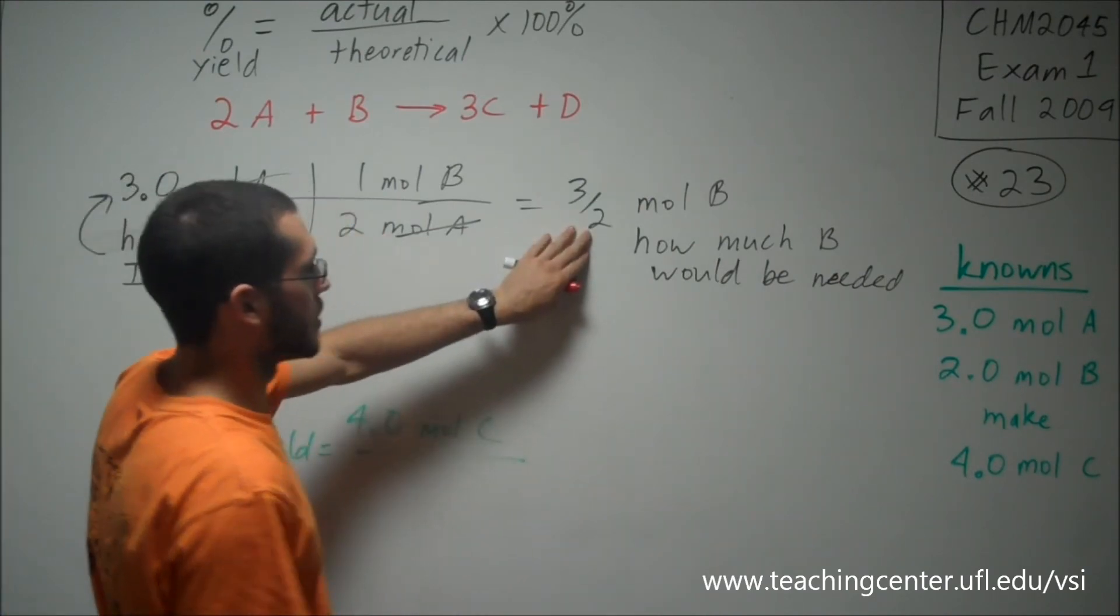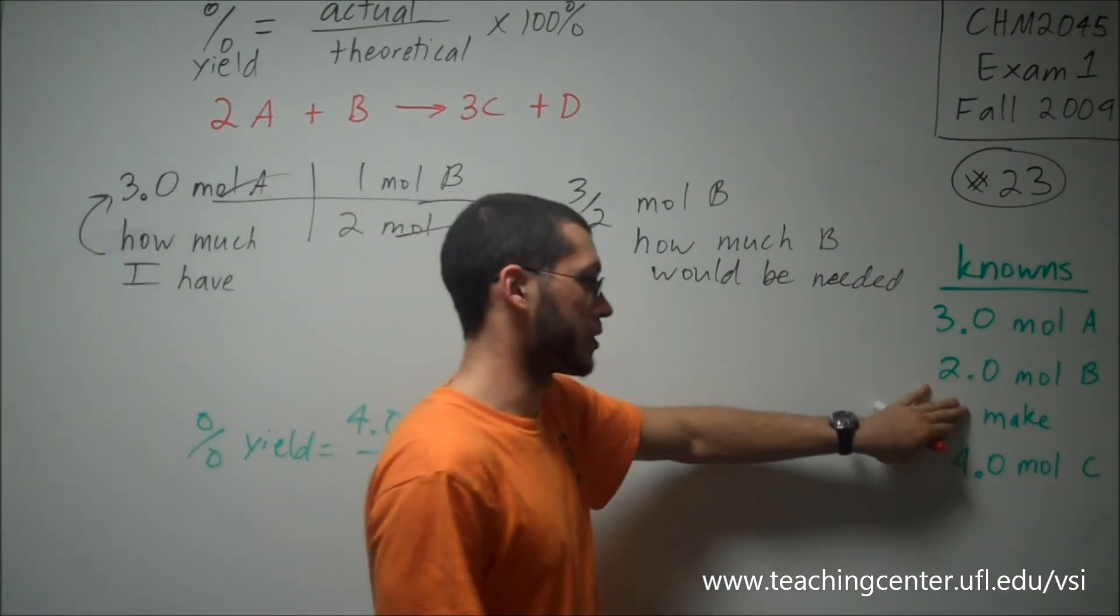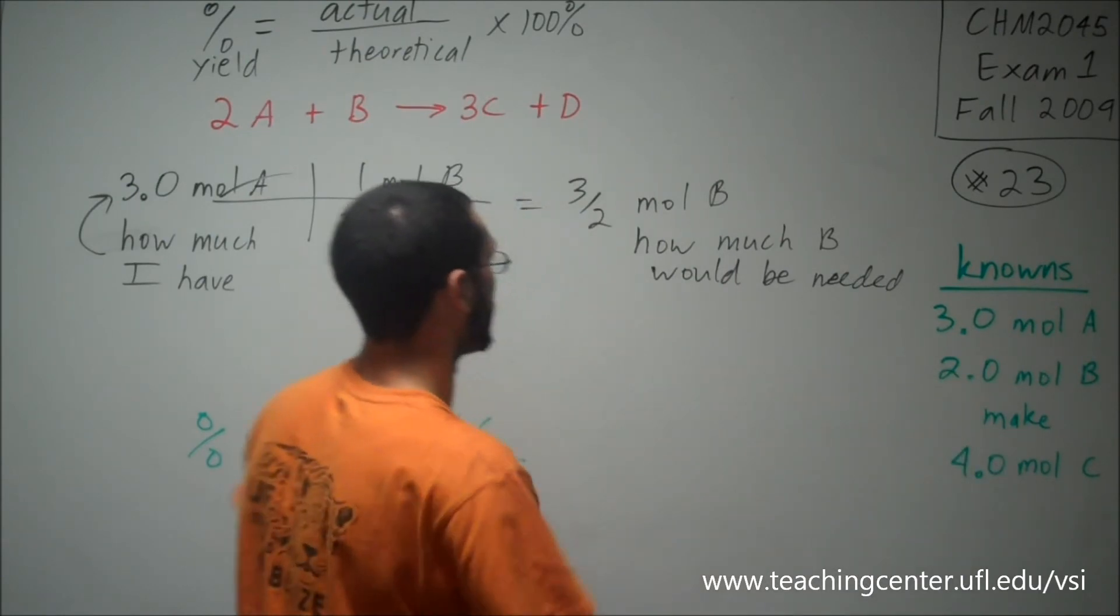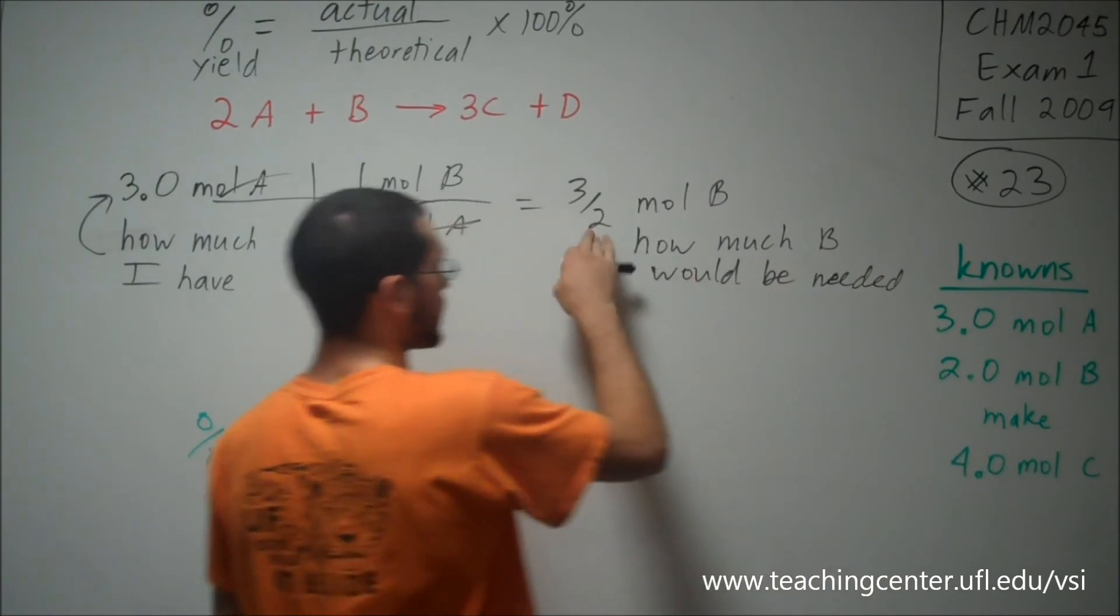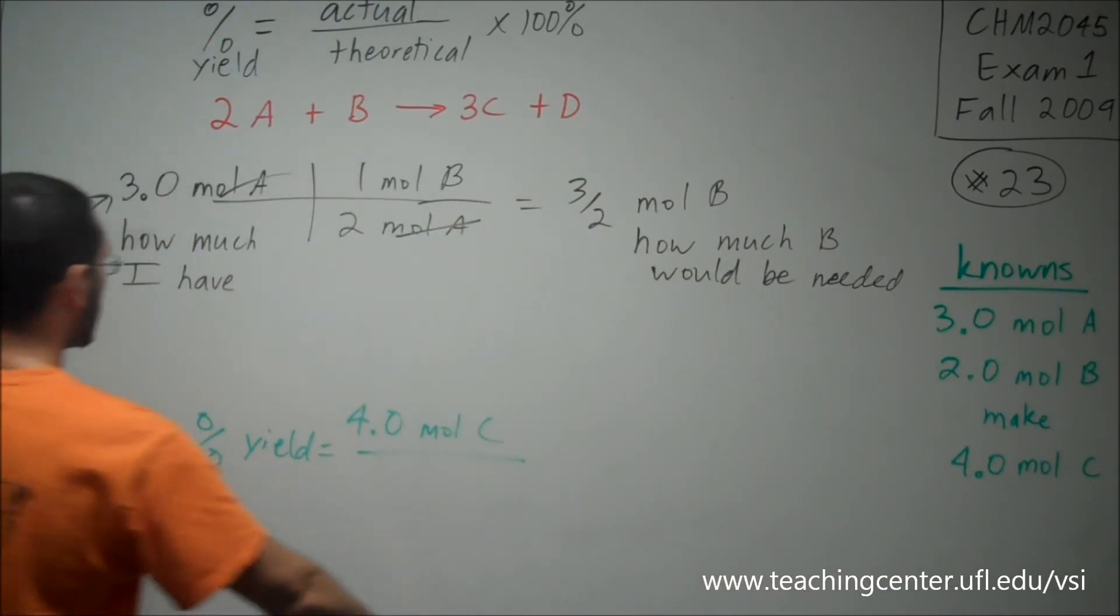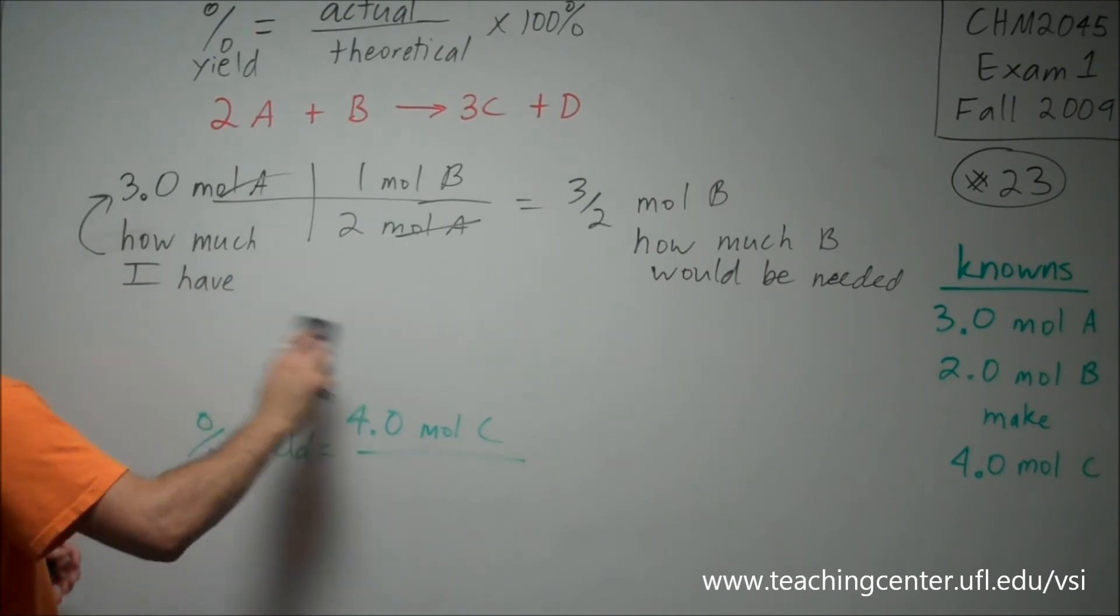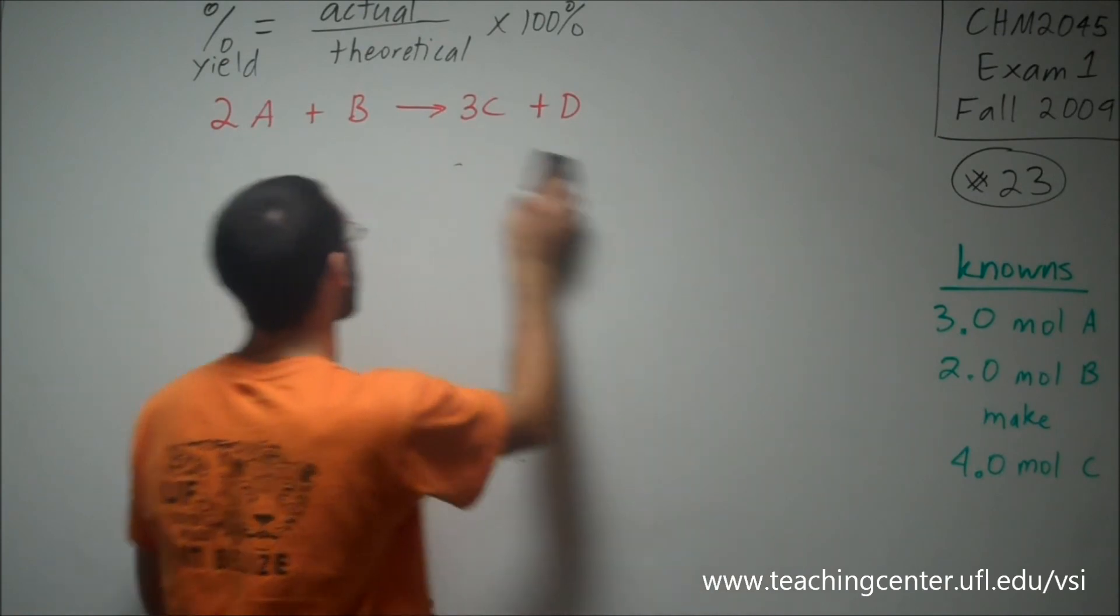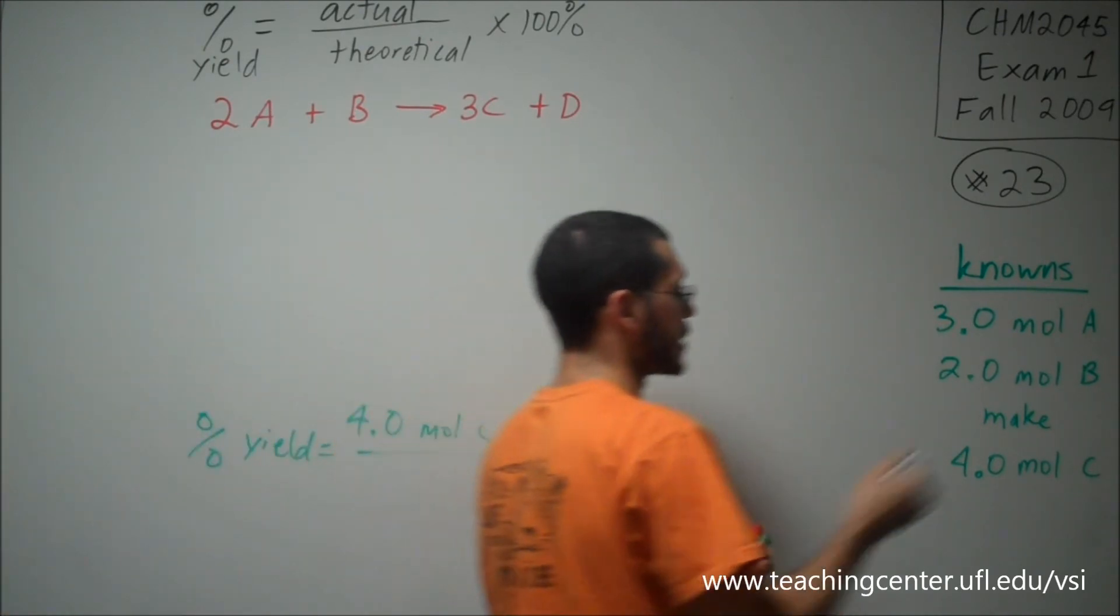Now the question comes, do I have this much? Do I have my 2? Yes, I do. I have plenty of B. So, right? Because 2 is bigger than 1.5. So yes, I do have enough B. So my A is going to go completely away. And that's why we just did that, is to conclude that A is the limiting reagent.